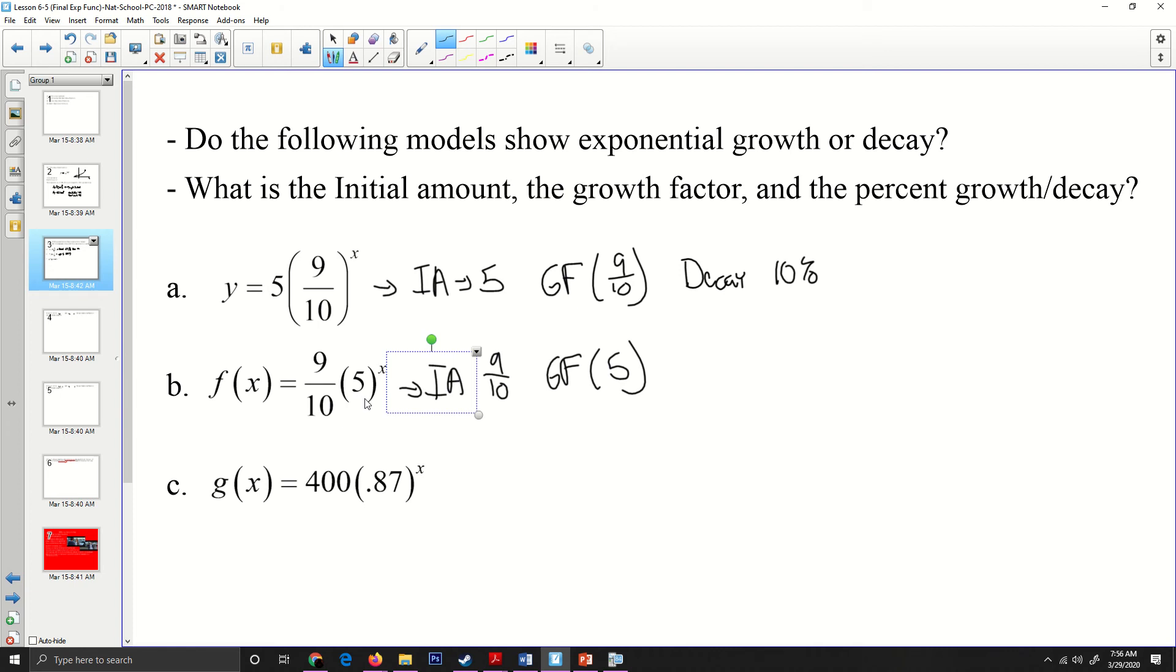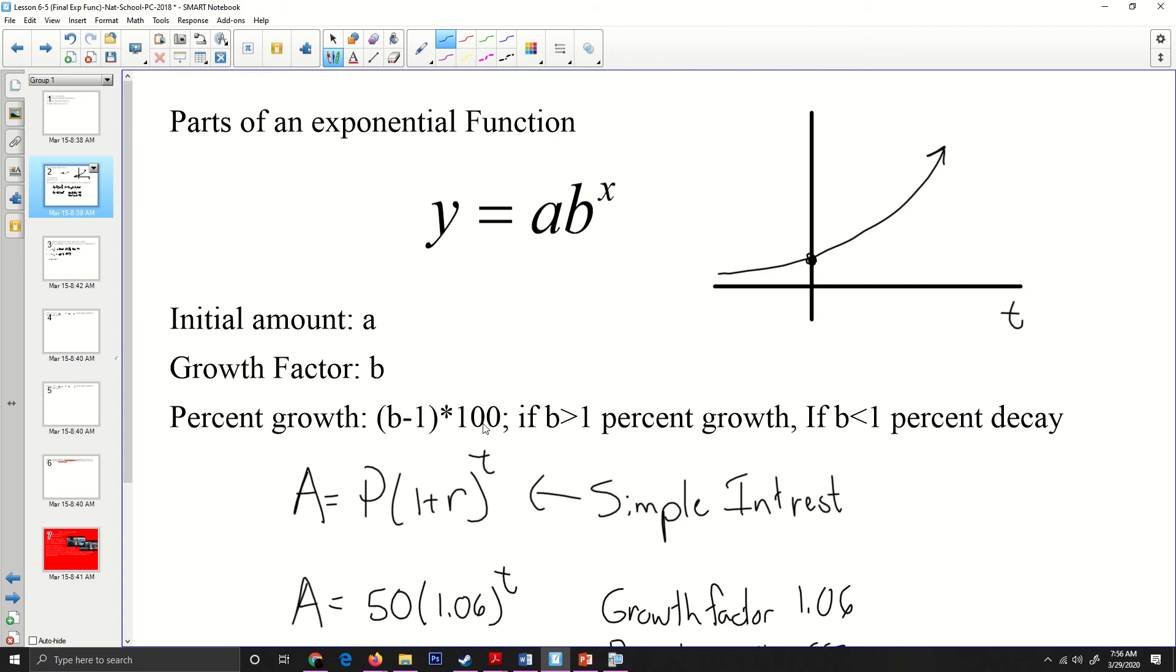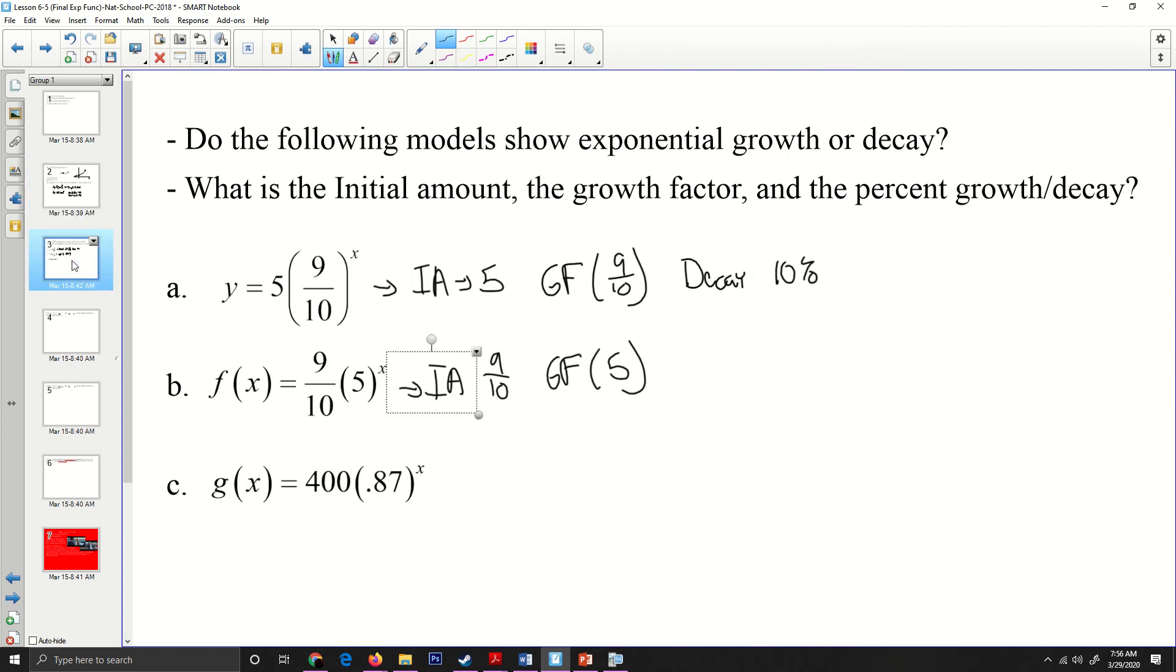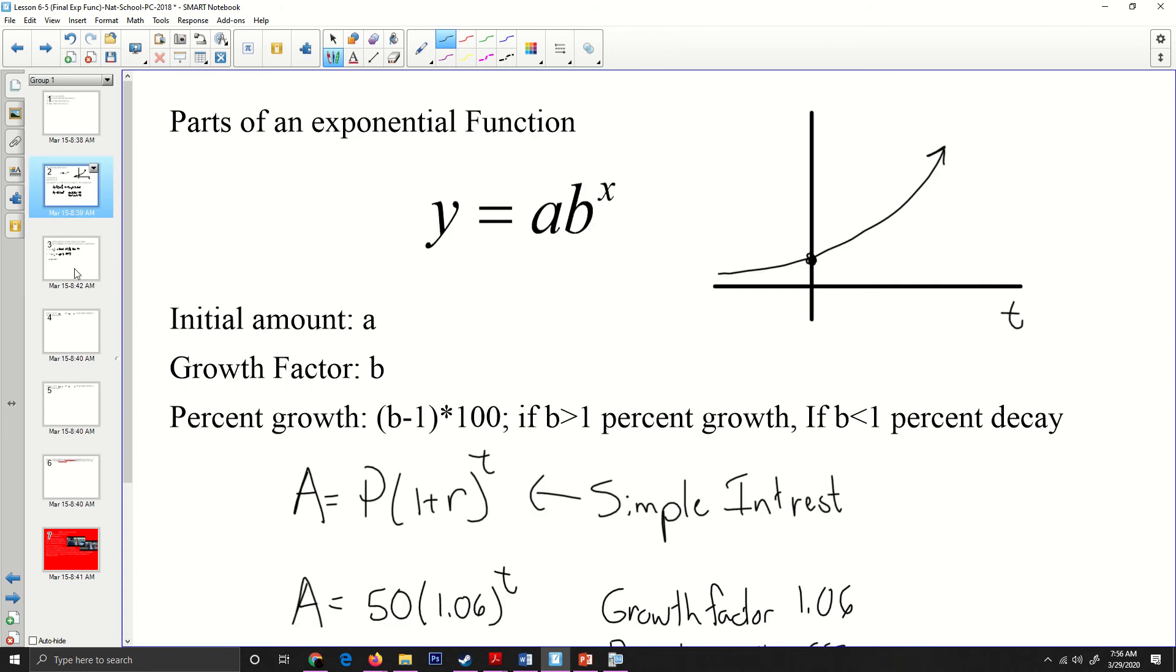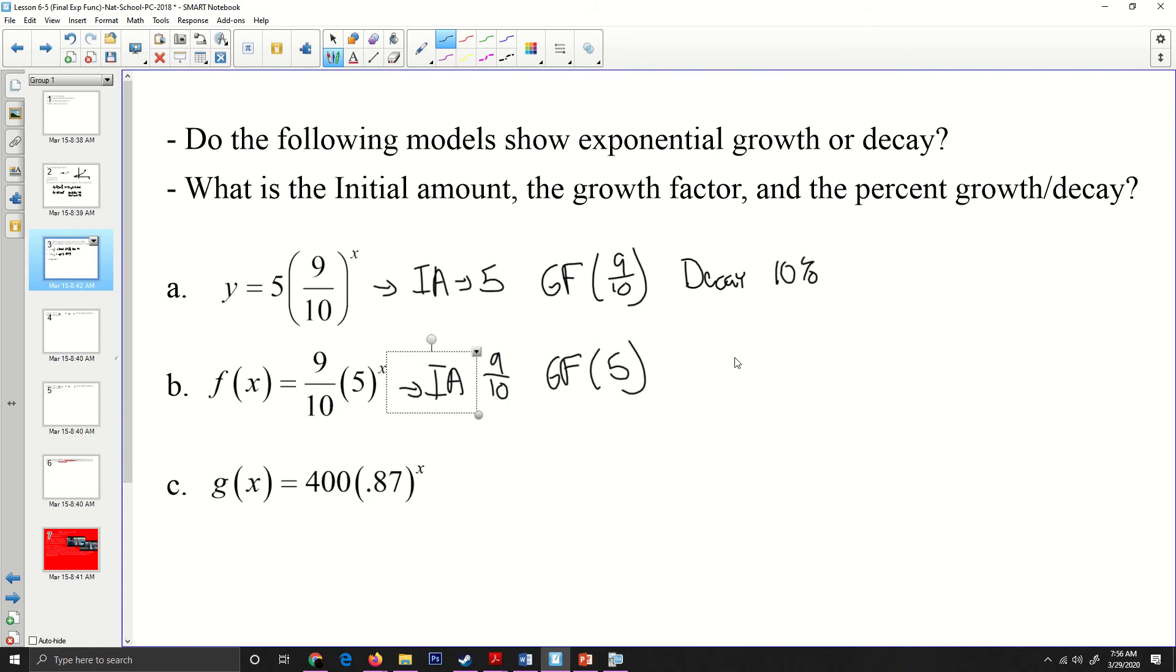And so if I do the little rule of thumb that I had here, multiply that by a hundred, four times a hundred is going to give me growth by 400%. That's pretty fast.